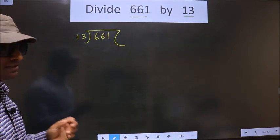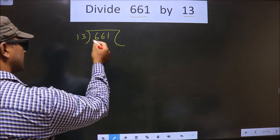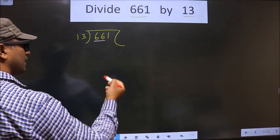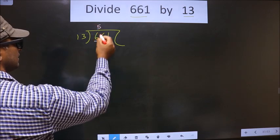Now here we have 6. 6 is smaller than 13, so we take two numbers, that is 66. A number close to 66 in the 13 table is 13 times 5, which is 65.